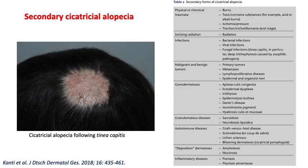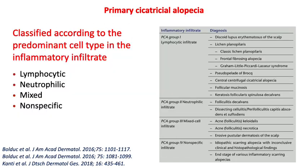There are many causes of secondary cicatricial alopecia, but frontal fibrosing alopecia is classified in the primary cicatricial alopecia. This type of cicatricial alopecia is classified on the basis of the predominant cell type in the inflammatory infiltrate: lymphocytic, neutrophilic, mixed, and non-specific.